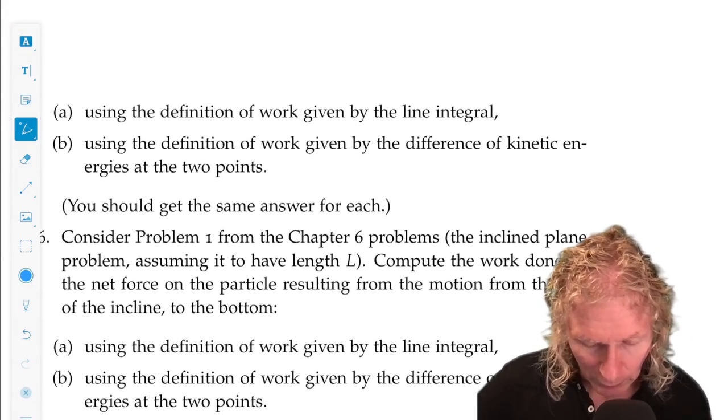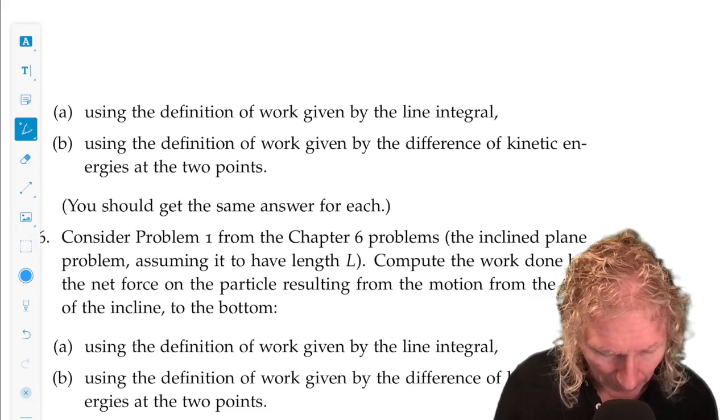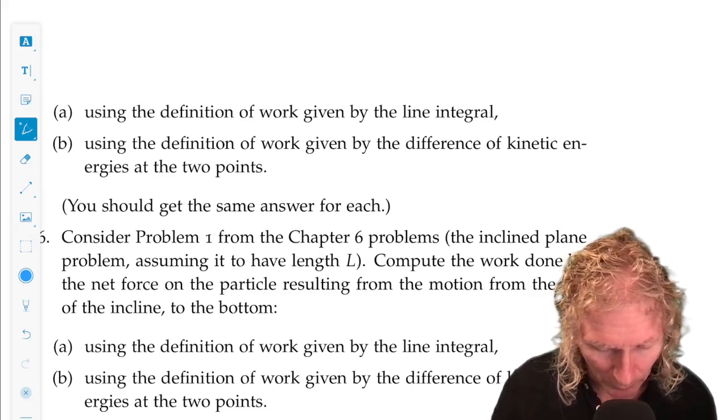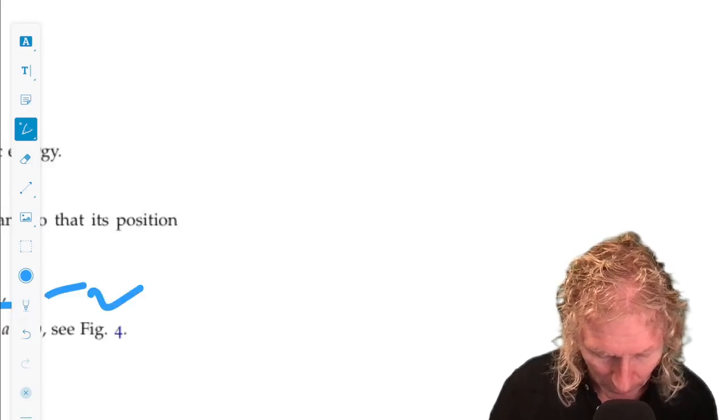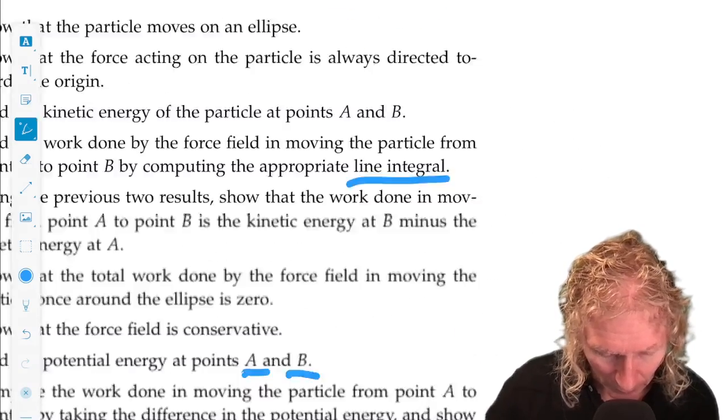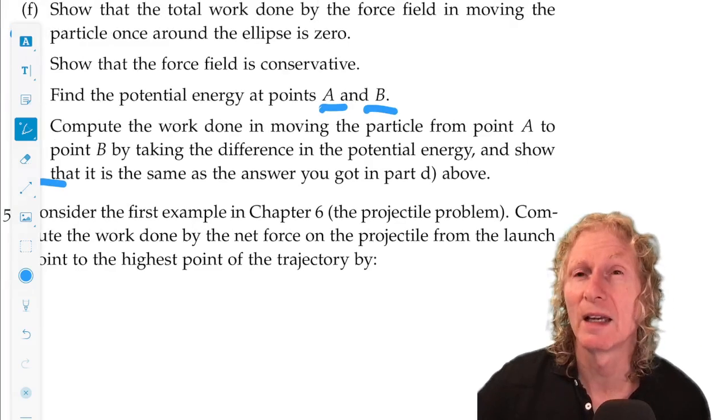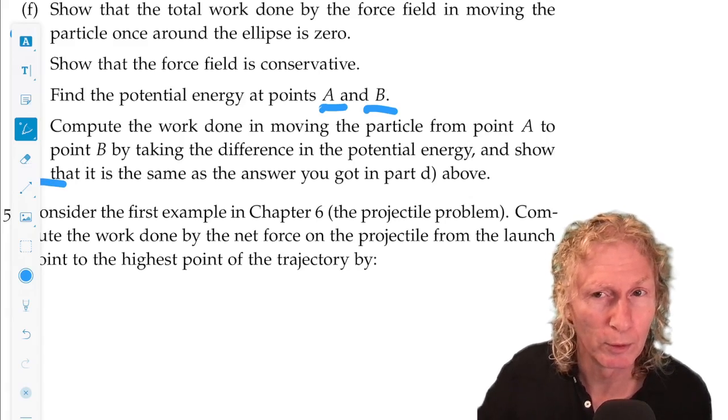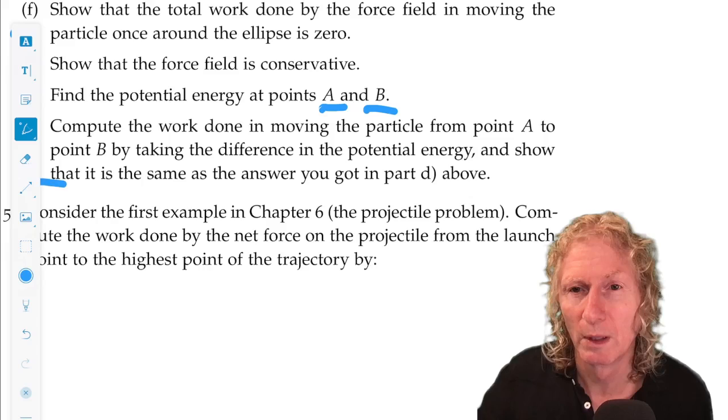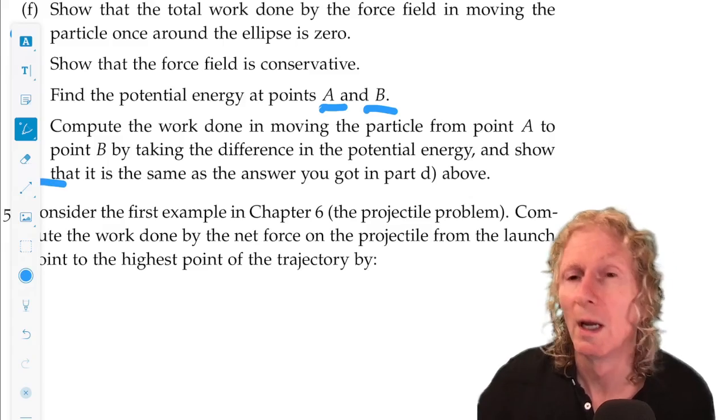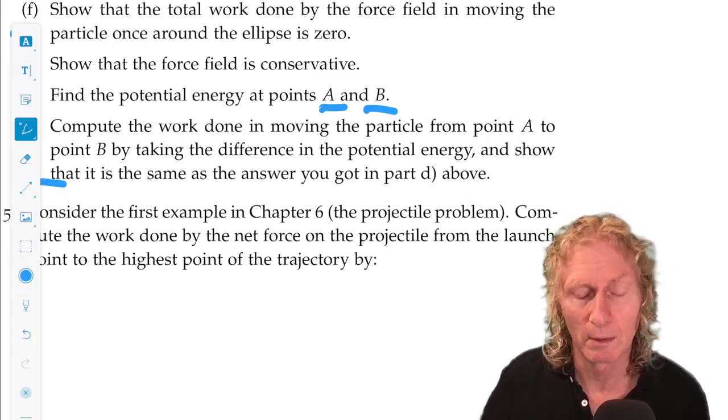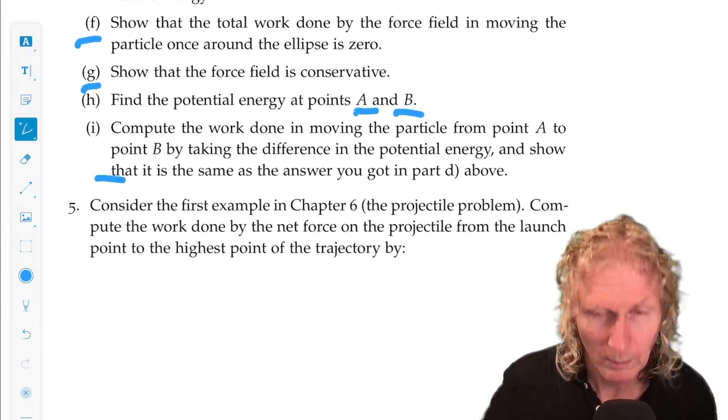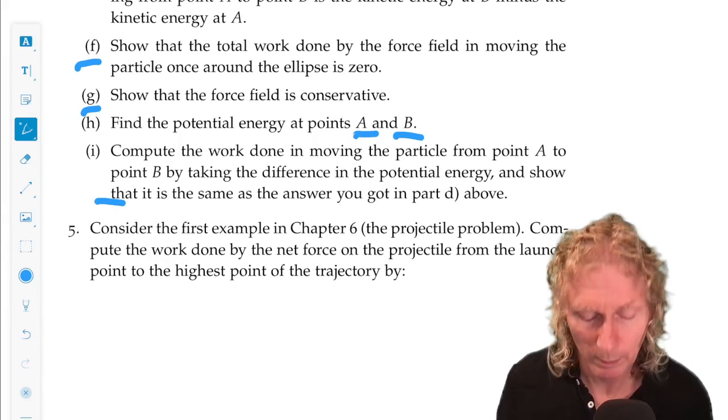is use the definition of work given by the line integral. And then using the definition of work by difference of kinetic energy, the two points, using those two definitions, I want you to find the highest point of the trajectory using those two approaches. The highest point of the trajectory is when velocity is zero, kinetic energy is zero, potential energy is maximum. Those ought to be the major hints that you will need to do this problem.